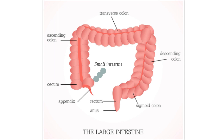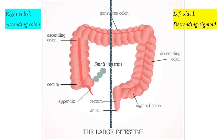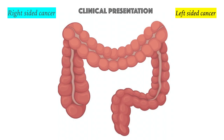A little bit on anatomy of the bowel. The bowel is normally divided into right-sided and left-sided. The right-sided is mainly the ascending colon, and the left-sided is the descending colon and sigmoid colon. There are some differences in clinical presentation between right-sided and left-sided cancer.